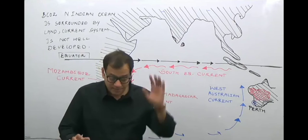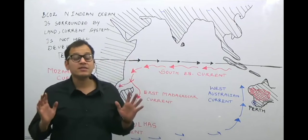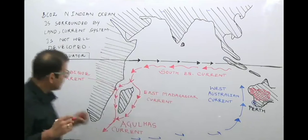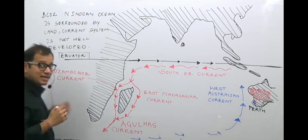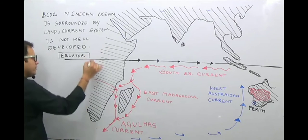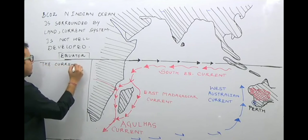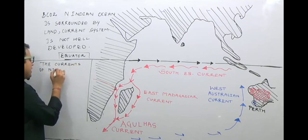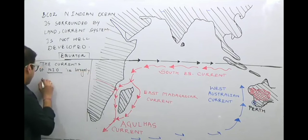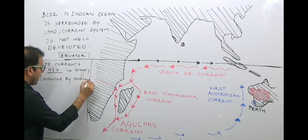Now let us look at the currents of the Northern Indian Ocean. Remember, the current system of the Indian Ocean is largely controlled by landmass and by the winds. Nowhere in the world is the effect of winds on ocean currents so dominant as in the Northern Indian Ocean. The North Indian Ocean current system is largely controlled by landmass and monsoon winds.